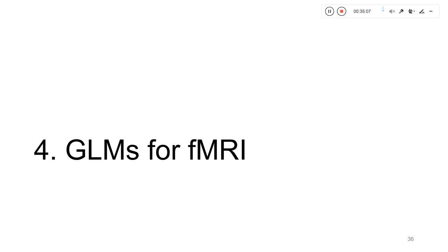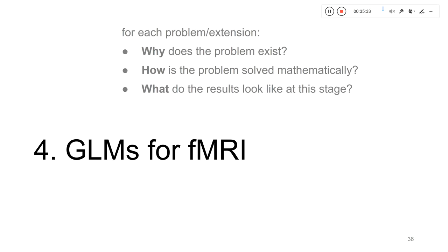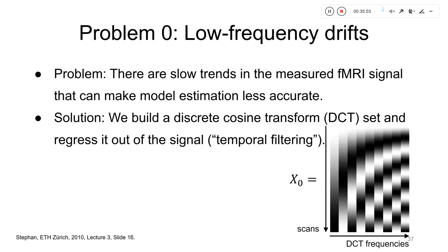We now consider how general linear models need to be modified to be fit for functional MRI data analysis. Subject matter expertise beats machine learning and coding, so you need to know about the type of data you're working with. We'll discuss this as a series of problems or extensions, addressing for each: why the problem exists, how to handle it mathematically, and what the results look like.